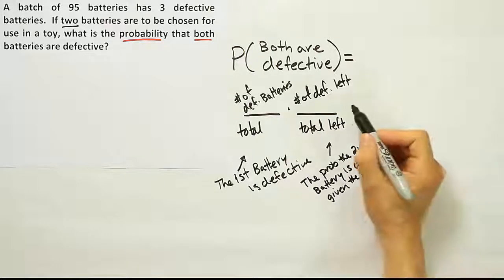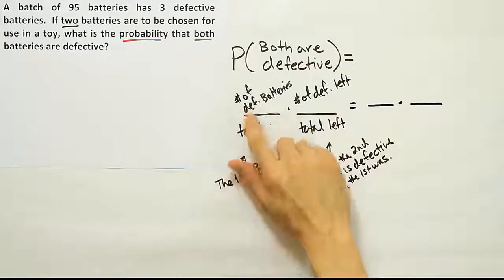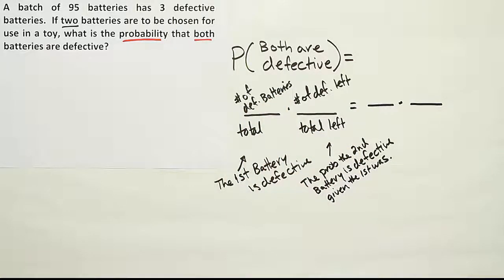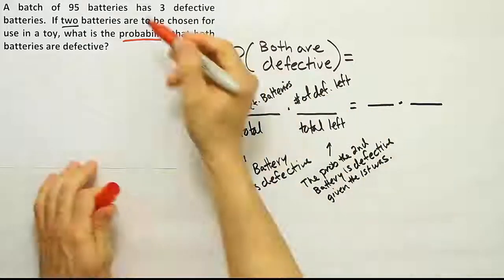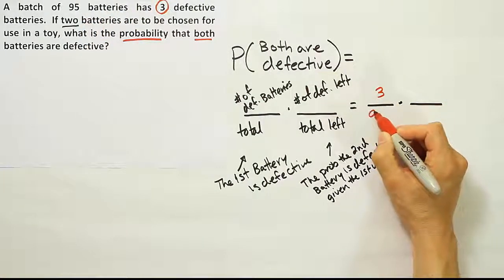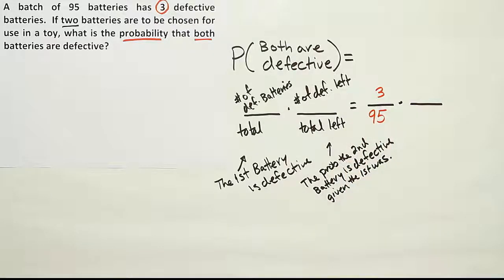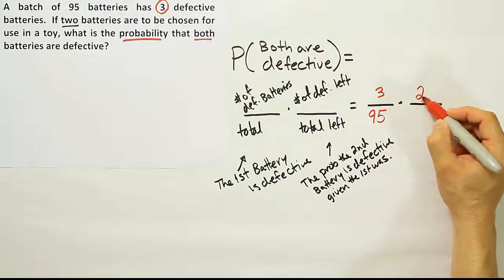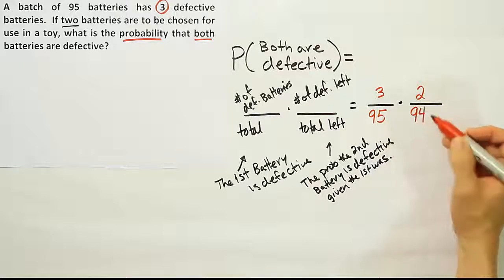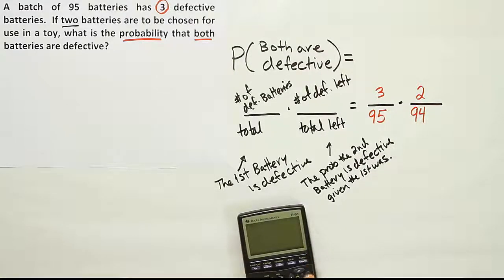To solve, all you have to do is put some numbers in. Let's fill in our two fractions. When we first go into the batch, there are three defective batteries, so the first probability is 3 out of 95. When I go back in, I assume the battery I took the first time was defective, so there are only two defective batteries left and only 94 total batteries left in the batch. So the second fraction is 2 over 94.